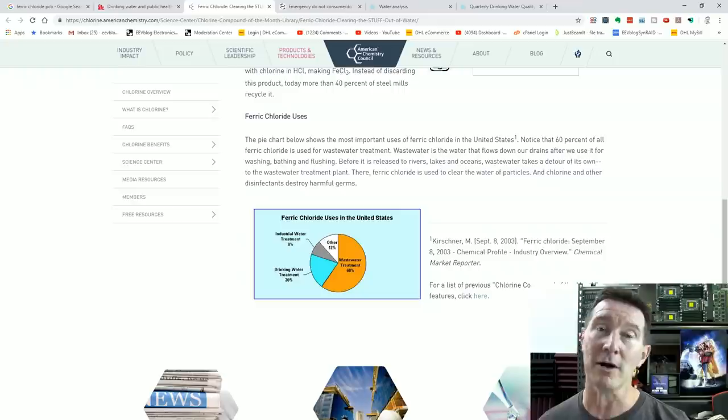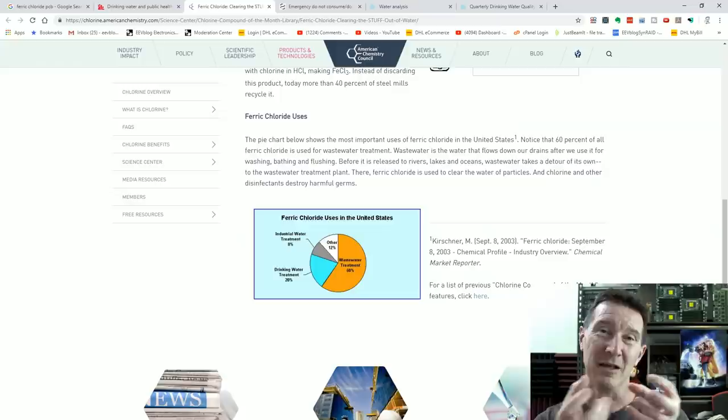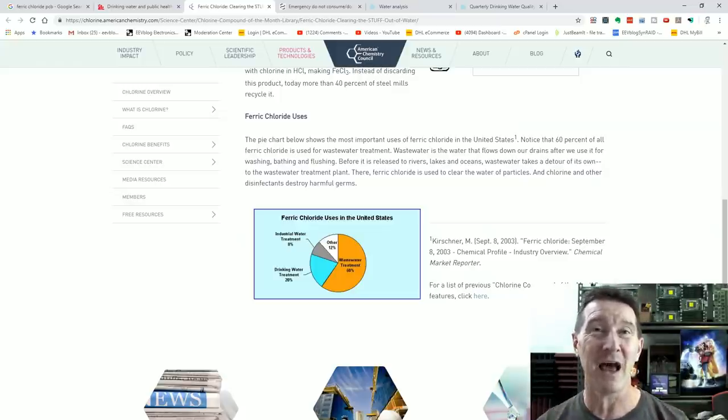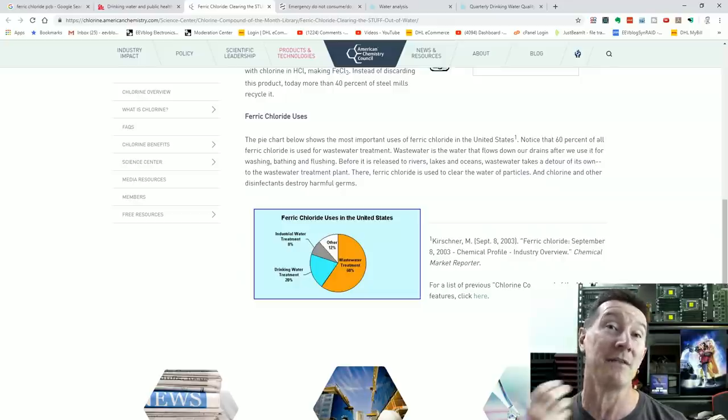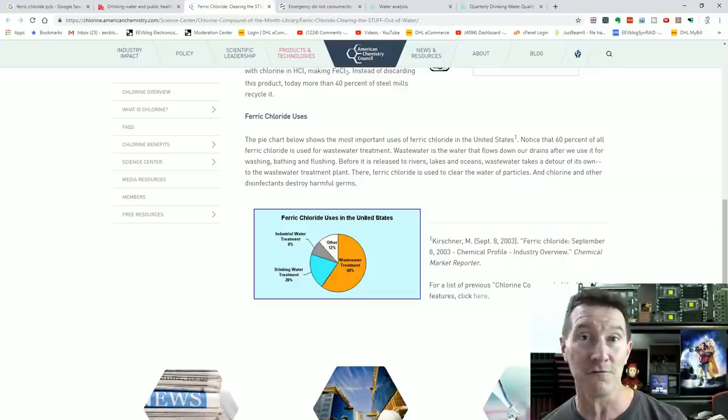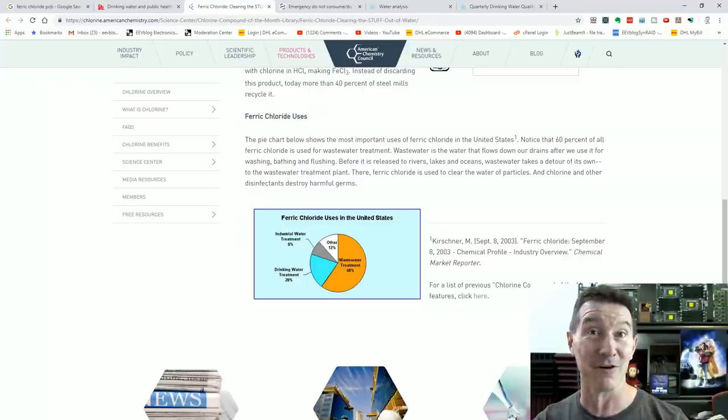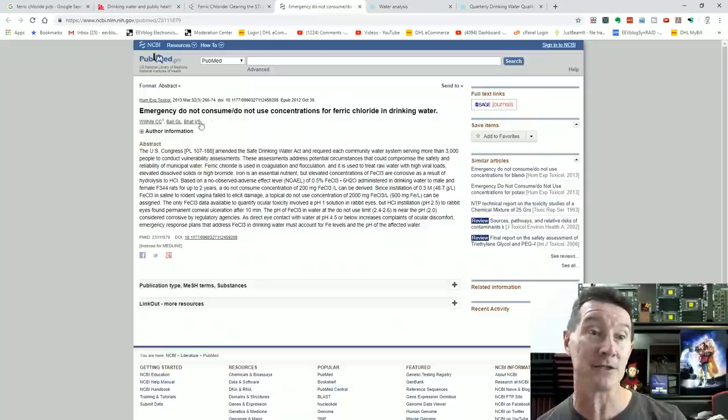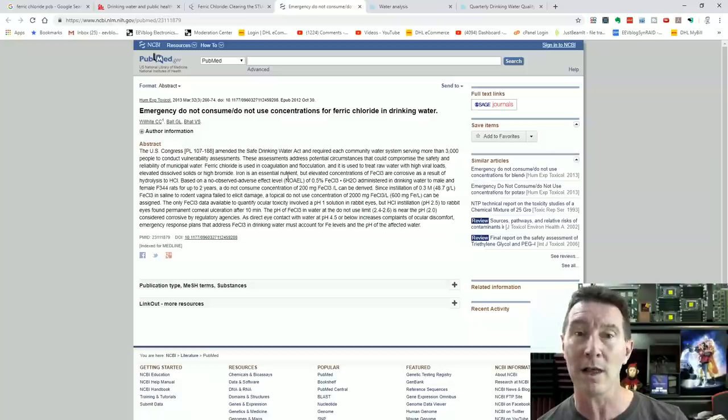So the reason they use ferric chloride is because it's actually what's called a flocculant, which helps bind. It's a binding agent that helps bind all the dirt and crap in the water. So then it's larger and then it can be more easily physically filtered out. But some of that ferric chloride gets through into your drinking water. But they actually have health limits for how much ferric chloride can actually be in the drinking water. It's fascinating.